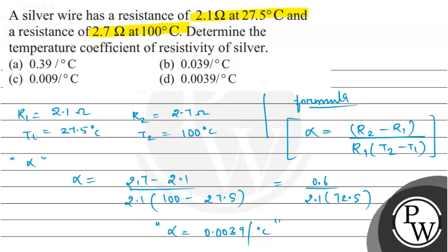If we talk about the options, then option D is 0.0039 per degree centigrade. So this is the correct option. I hope you all understood. Thank you so much. Take care.